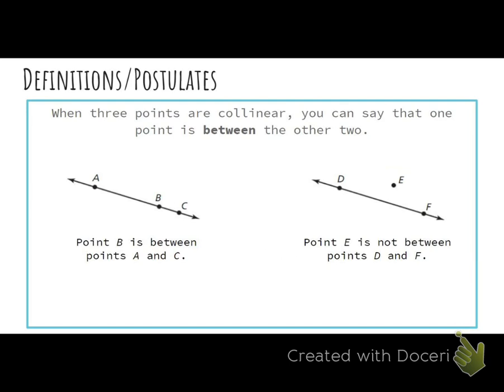So when three points are collinear, what does collinear mean? They're lying on the same line. You can say that one point is between the two others. So when there's three, one has to be in the middle. So point B, in this example, all three on the same line, point B is in the middle of A and C. Point E is not between these points because they're not collinear. It's off to the side. So E is not between D and F. Do you guys have any questions here?